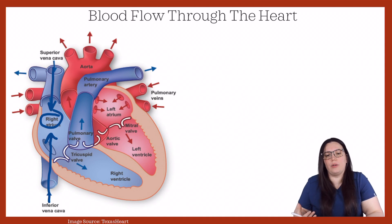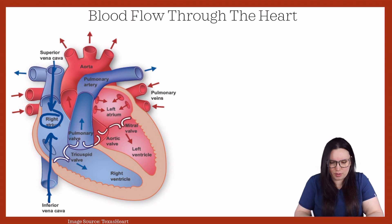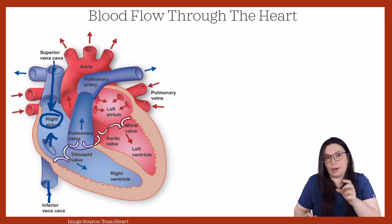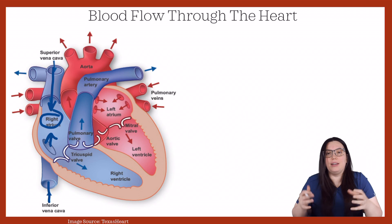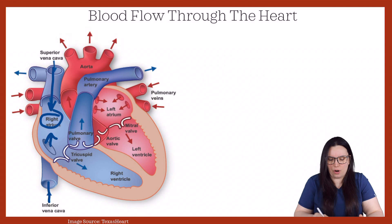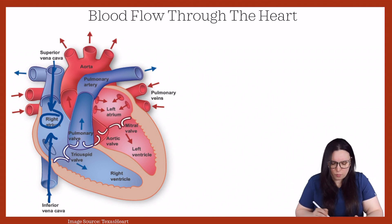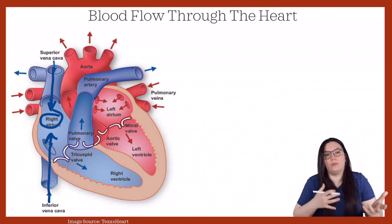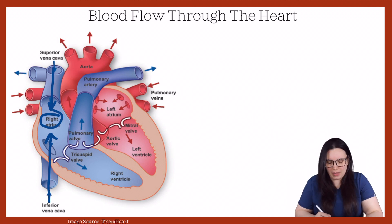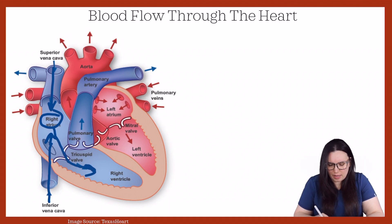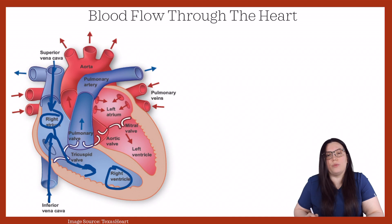In order for blood to get into our right ventricle, it has to pass through our tricuspid valve. Our tricuspid valve has three leaflets — 'tri' meaning three — because of all the extra pressure that's coming from our systemic circulation to the right side of our heart. That's just an easy way of remembering the difference between the mitral valve versus the tricuspid valve.